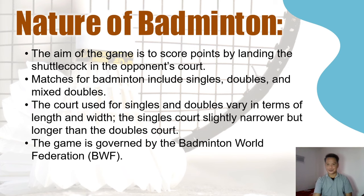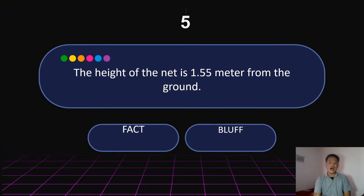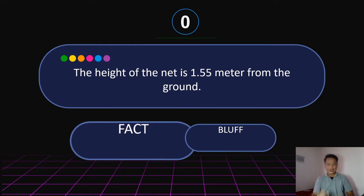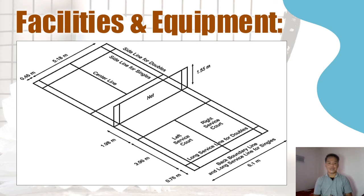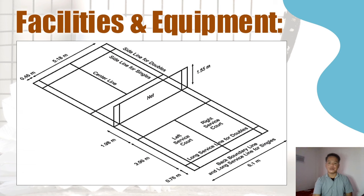The height of the net is 1.55 m from the ground — that is fact. Here are the facilities and equipment used in badminton. The net height is 1.55 m. The length of the court is also specified here, and the width of the court is 6.1 m.